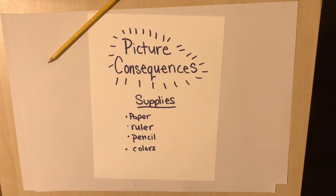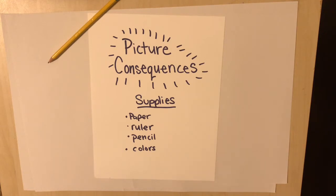We're going to do the drawing version today. For Picture Consequences you are going to need paper, a straight edge or a ruler, a pencil, and something to color with. We're going to be making two different versions: a very simple version for pre-K through second grade, and a more complicated version involving folding and cutting for third through fifth grade. You can choose to do both, or just try the simple one before doing the more complicated one.